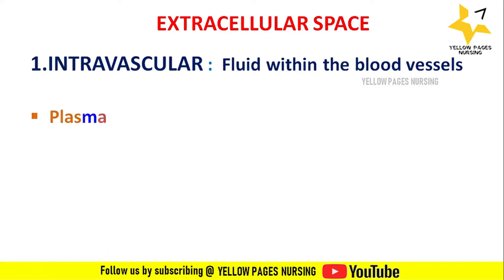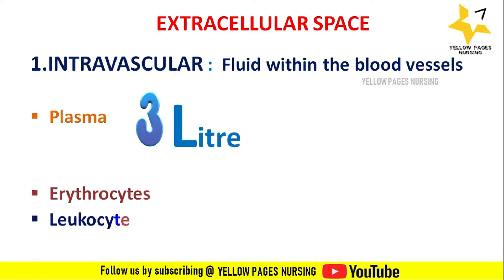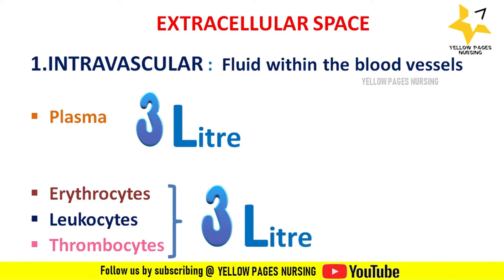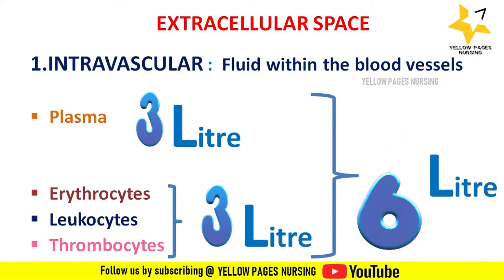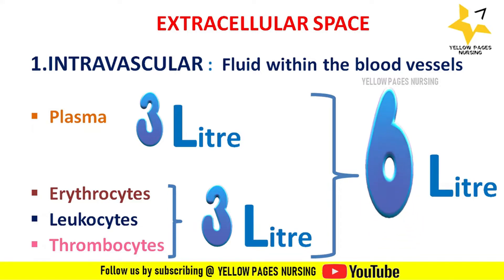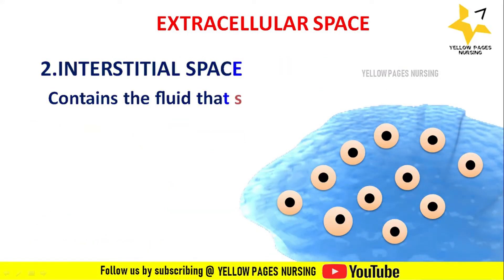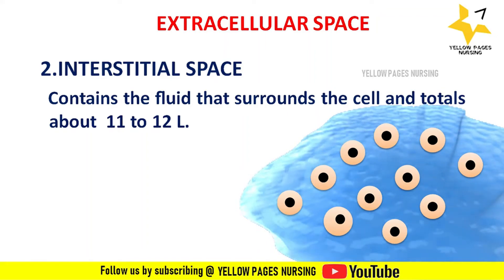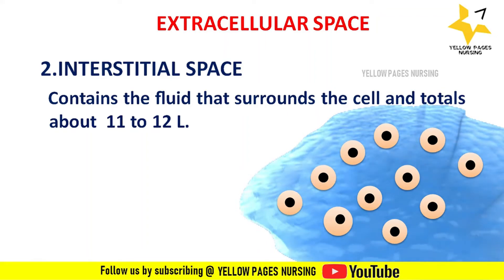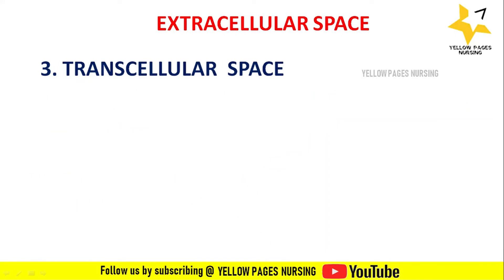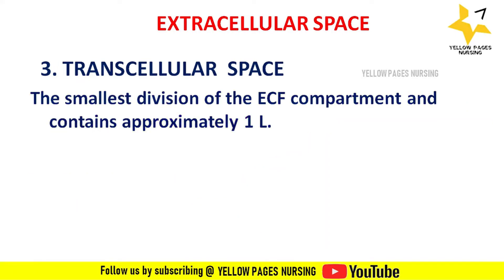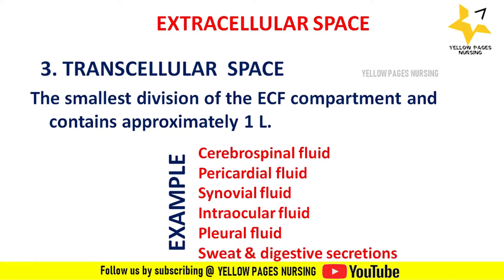Intravascular fluids are fluids within the blood vessels, comprising 3 liters of plasma and 3 liters of erythrocytes, leukocytes, and thrombocytes — totaling 6 liters of blood volume. Interstitial space contains fluid surrounding the cells, totaling about 11 to 12 liters in adults. The transcellular space is the smallest ECF division, containing approximately 1 liter — for example, cerebrospinal fluid, pericardial fluid, synovial fluid, intraocular fluid, pleural fluid, sweat, and digestive secretions.